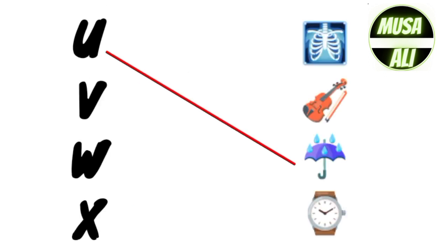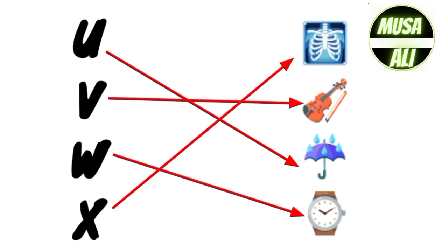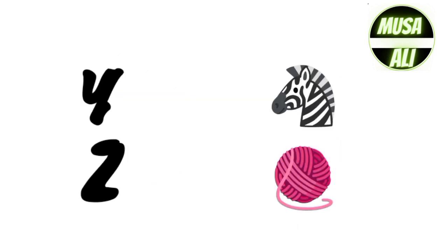U for Umbrella, V for Violin, W for Walk, X for Xtreme, Y for Yawn, Z for Zebra.